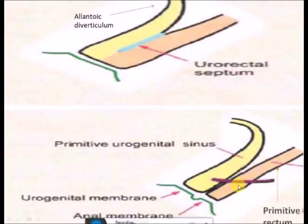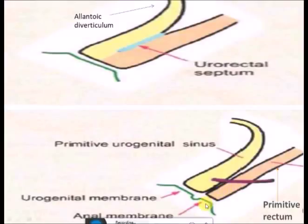The dorsal part is the primitive rectum, from which there is formation of the anorectal canal. For formation of the anal canal, two structures are required: the primitive rectum and the anal membrane. The anal membrane attaches here and is absorbed, completing formation of the anal canal.